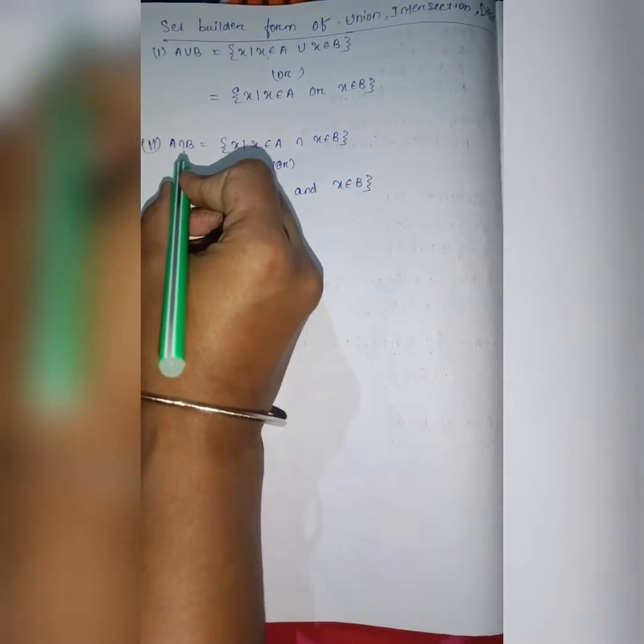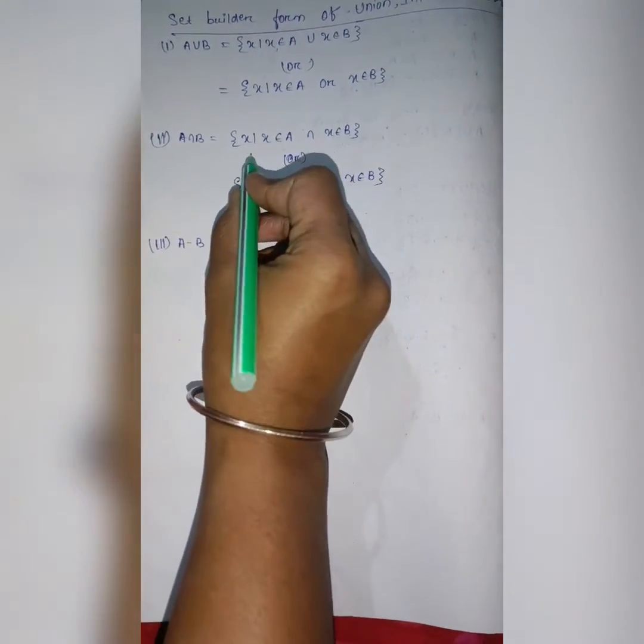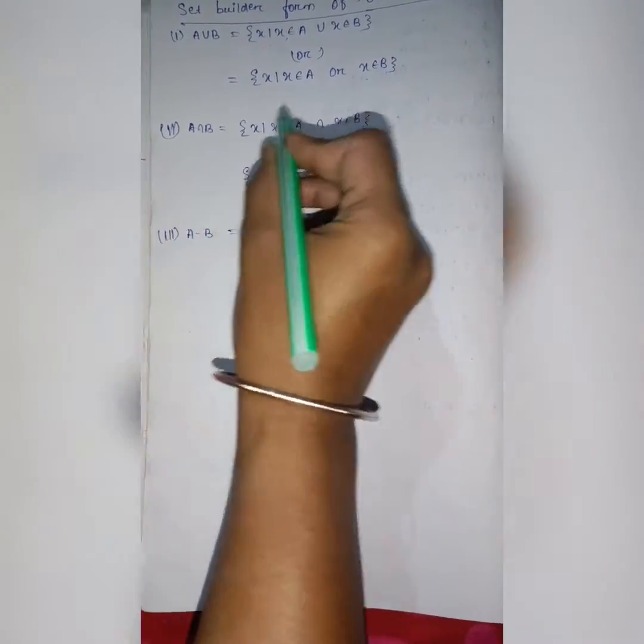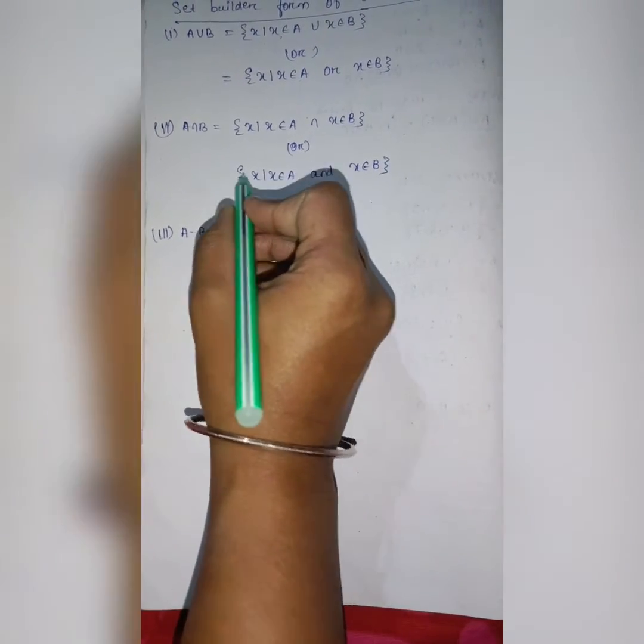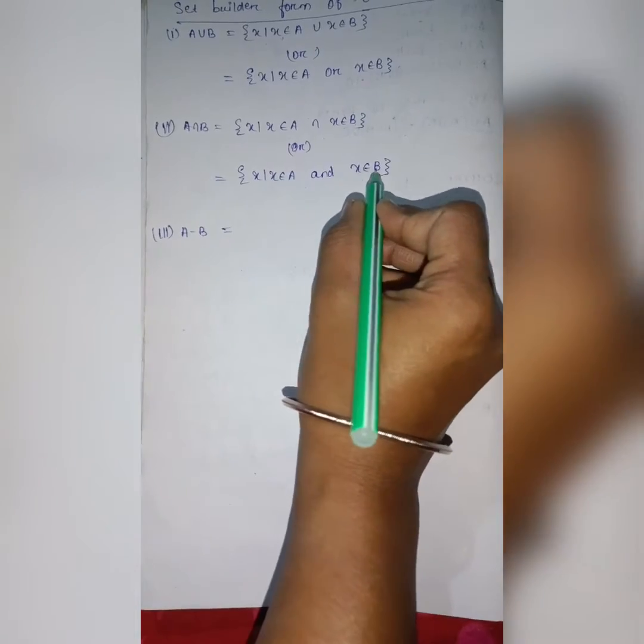Similarly A intersection B, x source that x belongs to A, intersection x belongs to B or x source that x belongs to A and x belongs to B.